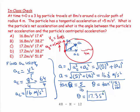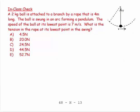So there we have it. So there we have our two answers. Let's go on to the next one. A 2 kilogram ball is attached to a branch. So we have a 2 kilogram ball, we have a branch. And the ball is swung in an arc, forming a pendulum.